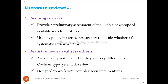A scoping review allows researchers and policymakers to assess whether sufficient literature exists on a topic. For example, at the beginning of COVID-19 in 2019, when there was limited literature, a scoping review could check the size and scope of available COVID literature to determine whether a further systematic review was warranted. The fifth type is the realist review or realist synthesis, which is systematic but very different from the Cochrane-type systematic review, designed to work with complex social interventions.